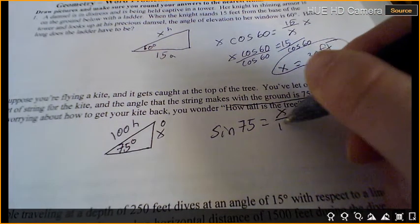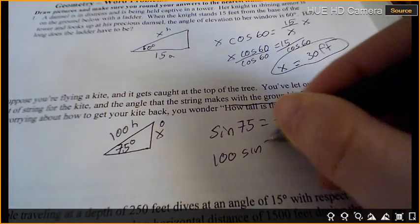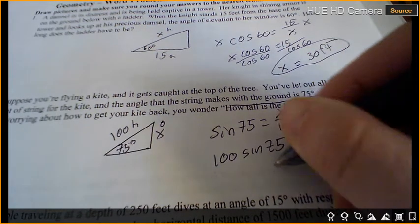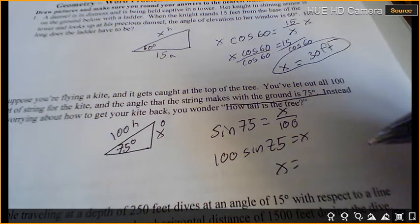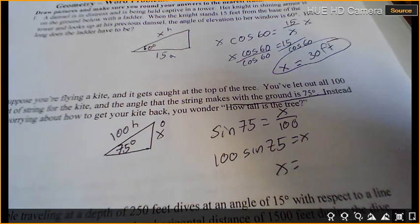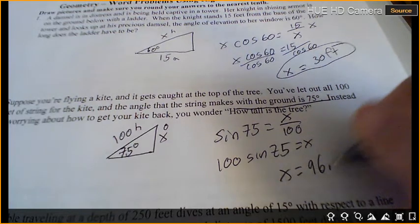So sine of 75 equals opposite over hypotenuse. Multiply both sides by 100. 100 sine 75 equals x. So x equals approximately 96.6 feet.